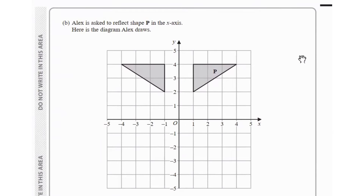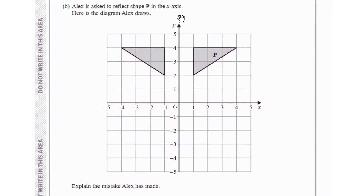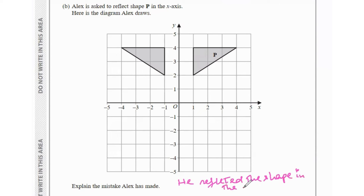Part b says Alex is asked to reflect shape P in the x-axis, but explain the mistake Alex made. The question clearly says to reflect in the x-axis, but Alex has instead reflected the shape in the y-axis. The correct reflection of shape P should be in the x-axis, not the y-axis.